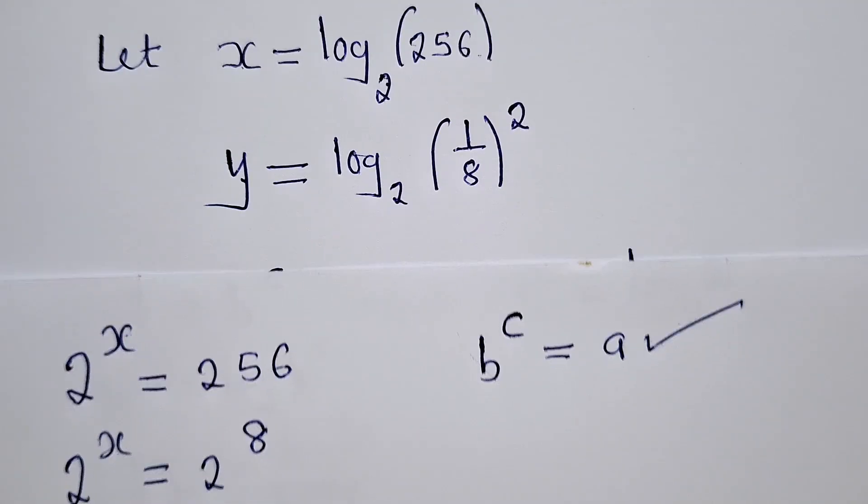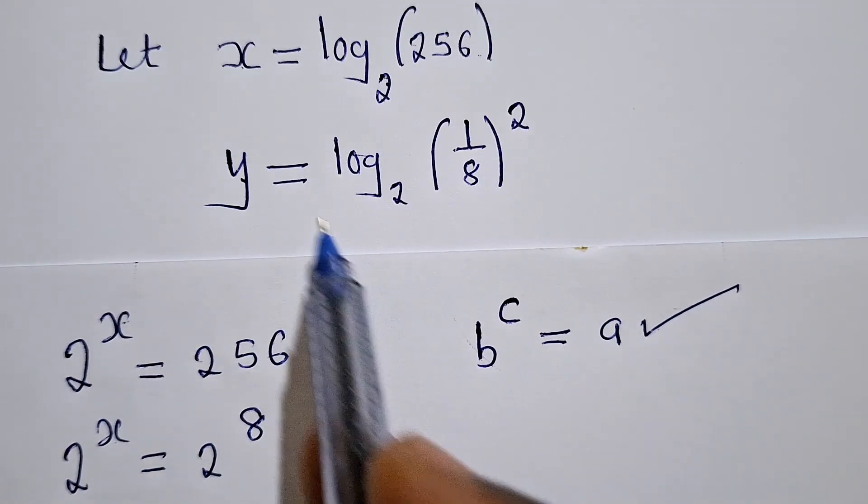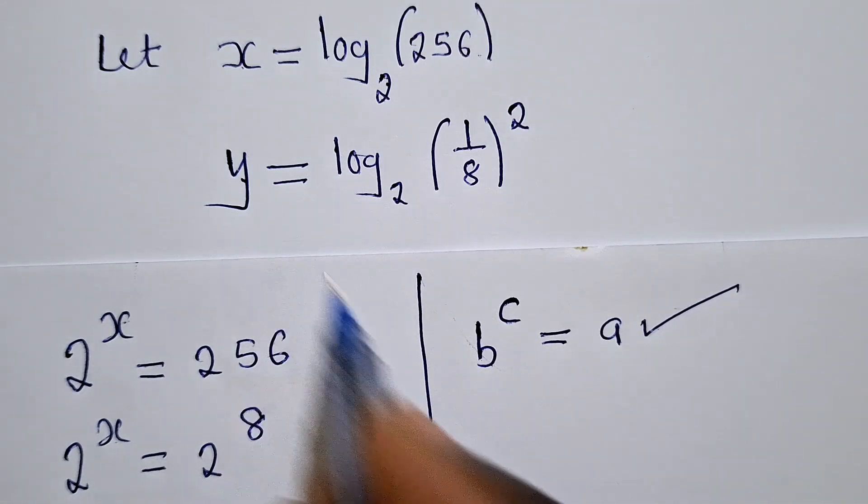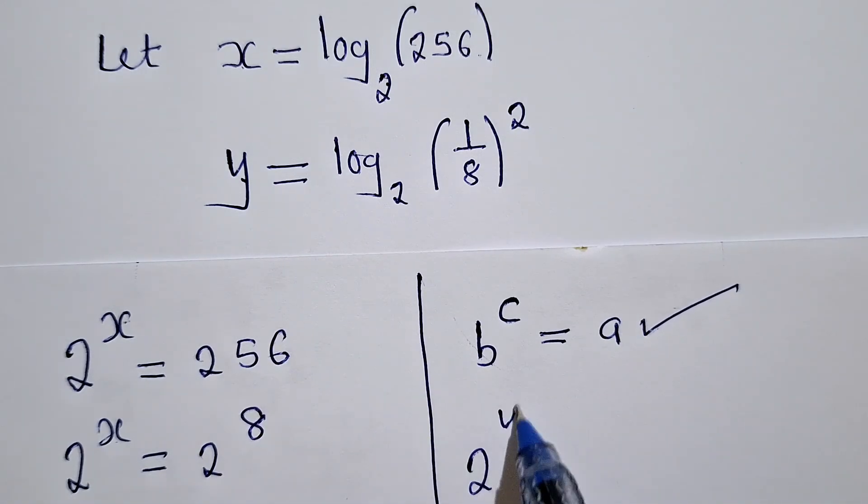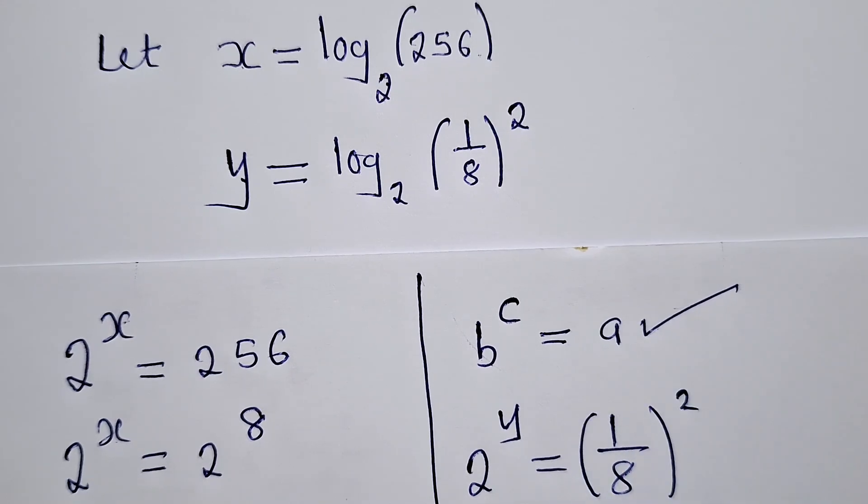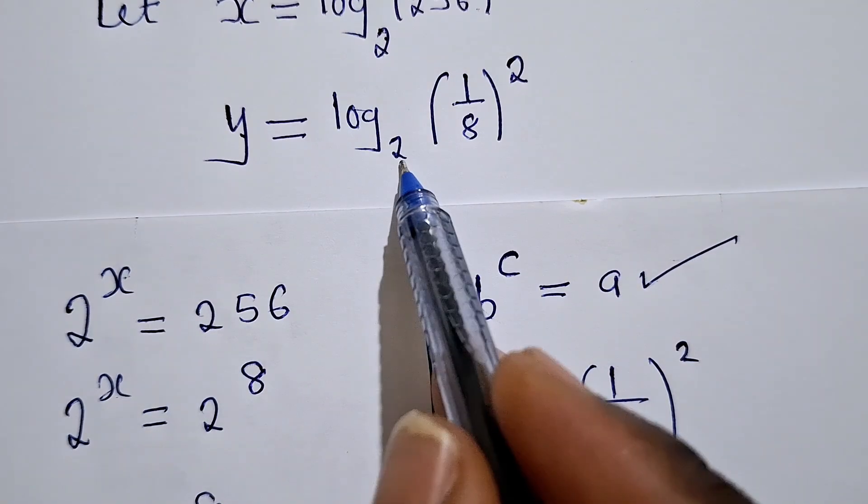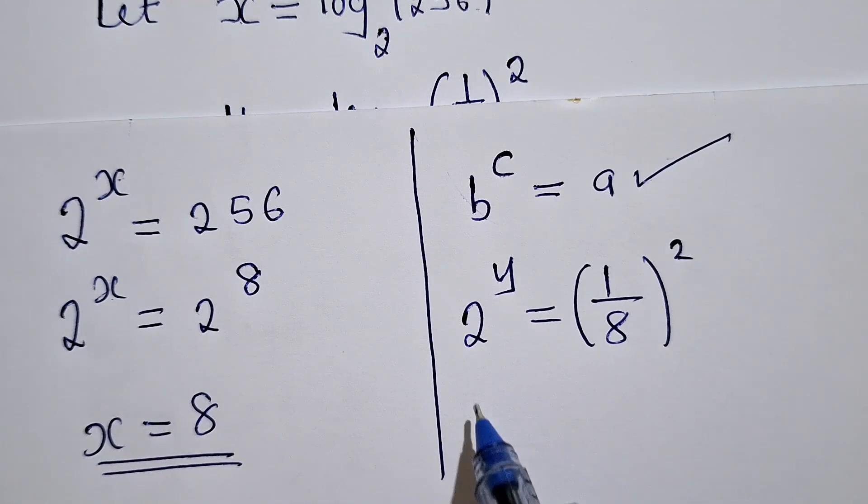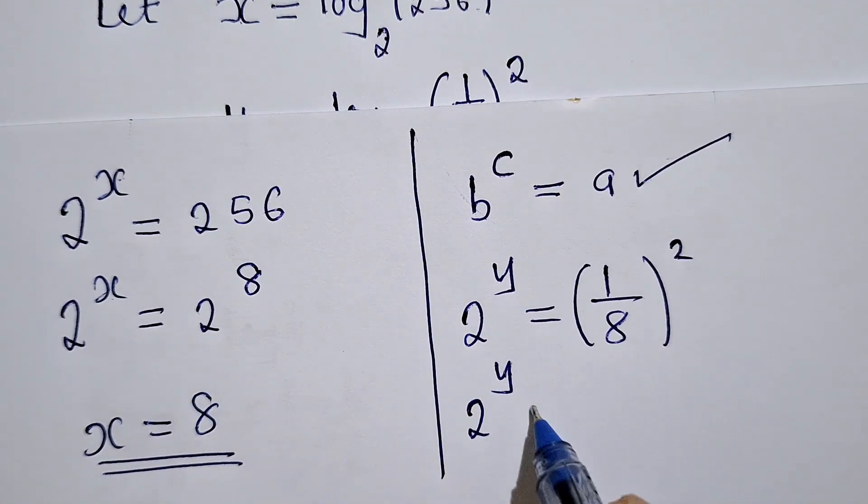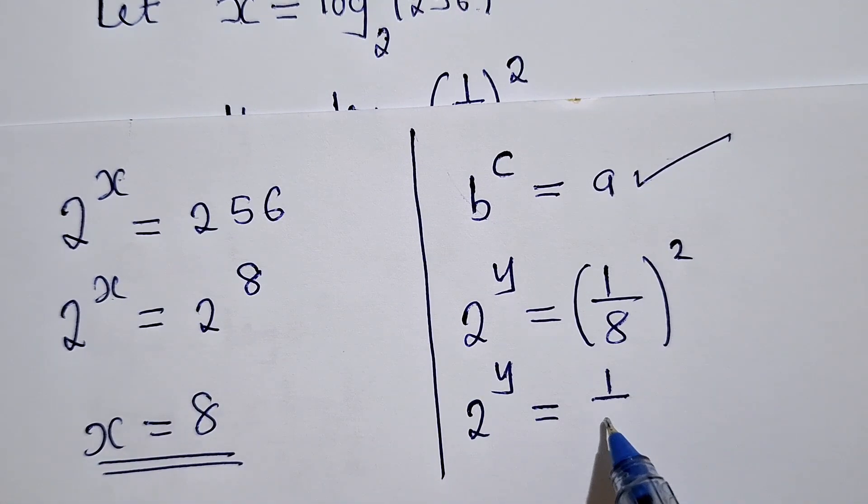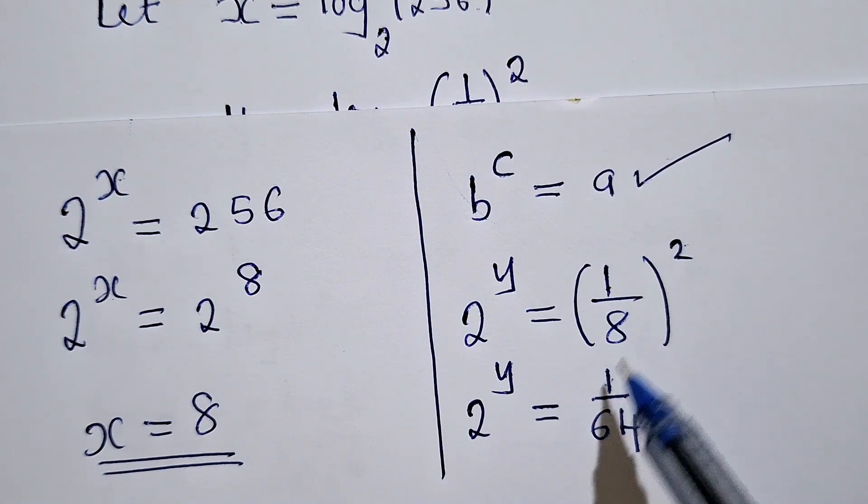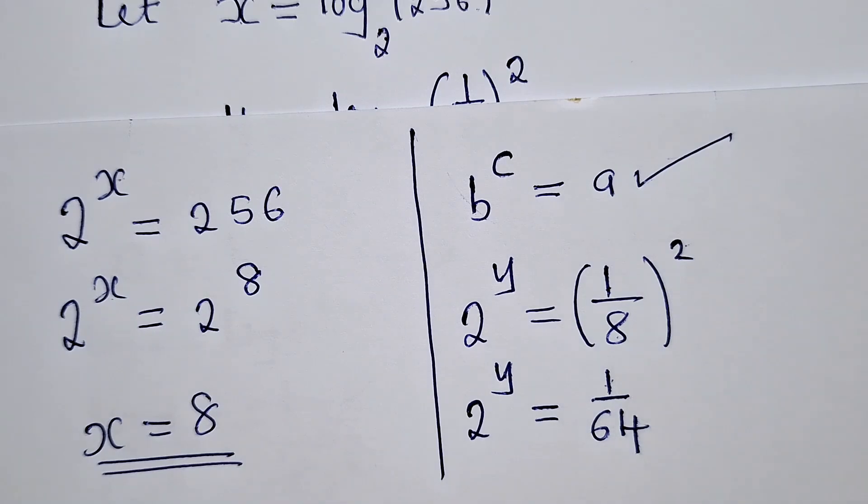Now we go for y. So y here, the same will be done. So it will be 2 power y is equal to 1 over 8 power 2. So you see, this 2 will push this y. The y will become a power. So here we can say 2 power y is equal to 1 over 64, because 1 to the power 2 will give us 1, 8 to the power 2 will give us 64.